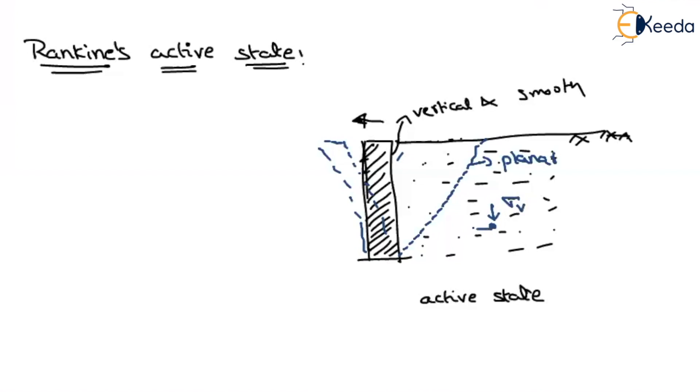Nothing but vertical stress. As you are talking about the active state, let us say sigma h be the lateral earth pressure. So if you compare the magnitudes, vertical stress will be larger than the horizontal stress.